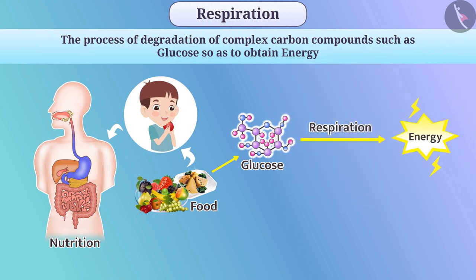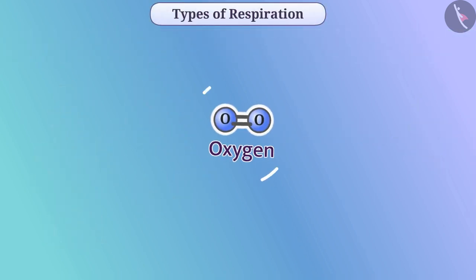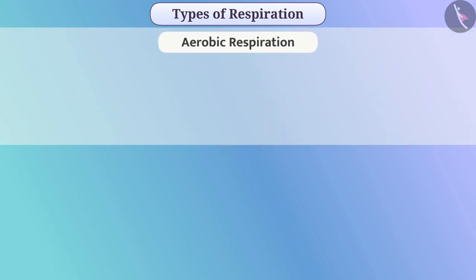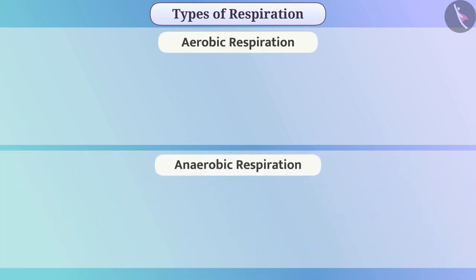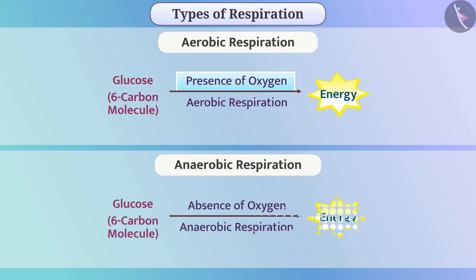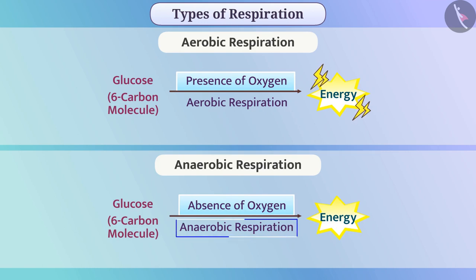Let's understand this process in detail. Depending on the need for oxygen, we can divide respiration into two types: aerobic respiration and anaerobic respiration. In aerobic respiration, glucose is broken down completely into carbon dioxide and water in the presence of oxygen, and energy is obtained. In anaerobic respiration, glucose is broken down without using oxygen and energy is obtained. Aerobic respiration produces more energy than anaerobic respiration.